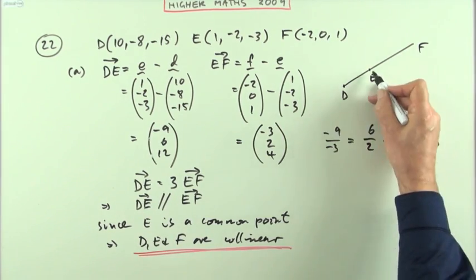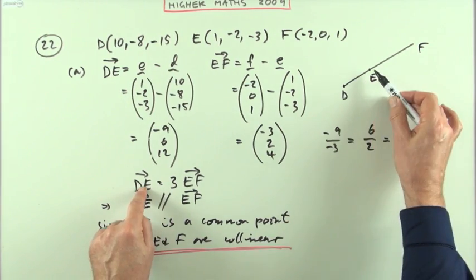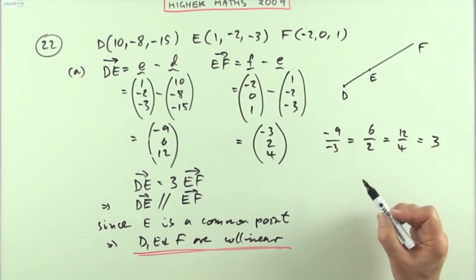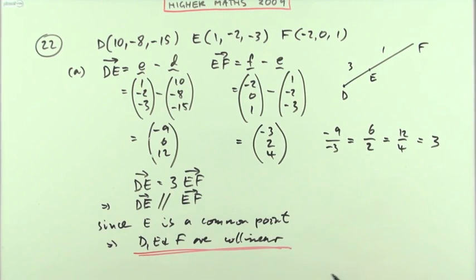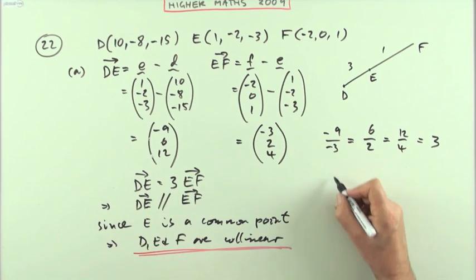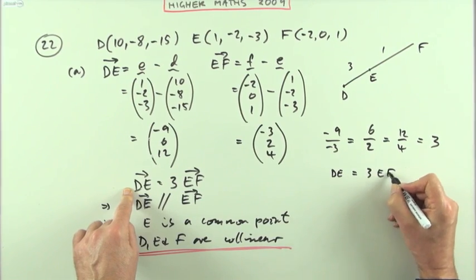Then the ratio in which E divides DF: I've got it here, DE is three times EF. It doesn't look like that, of course, which means that part would be 3 and that part would be 1. So the ratio is 3 to 1. You could state it like that, or you could say if you were to divide that out, what would you have?